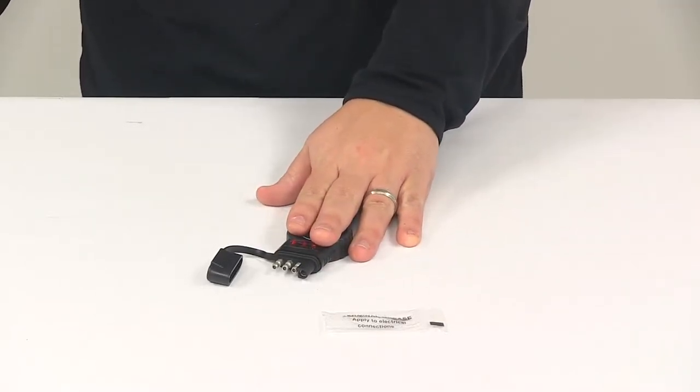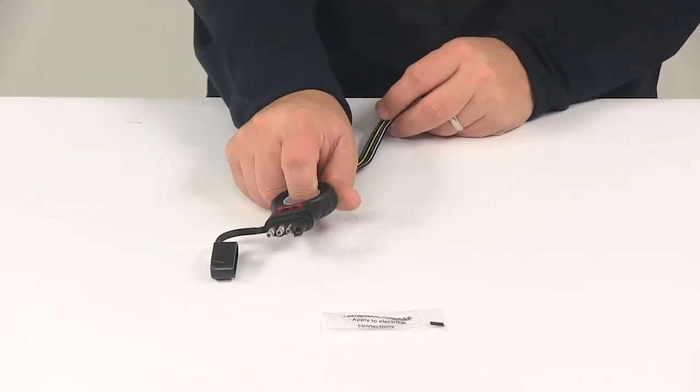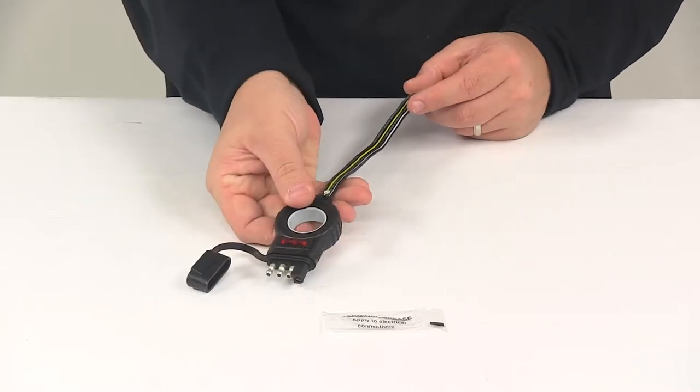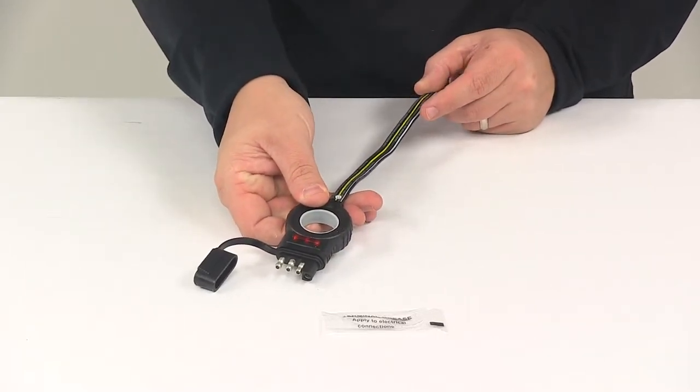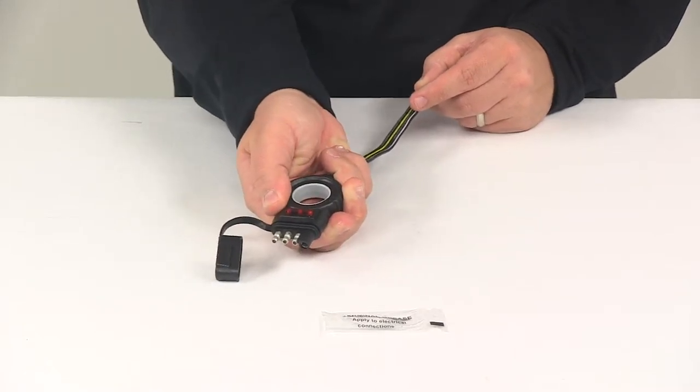The four-way flat trailer connector plugs into the four-way flat on your vehicle. It's going to feature the easy to pull ring that makes it very easy to disconnect the plug. The ring handle makes it easy to pull the connector straight back for proper leverage.